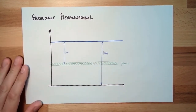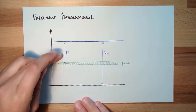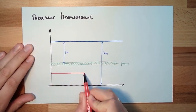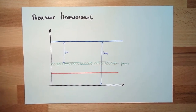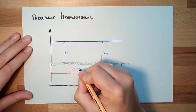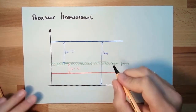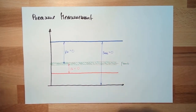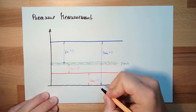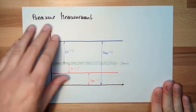Absolute pressure is always bigger than zero. And the excessive pressure may be lower, because if we have, for instance, a suction tube, then this PE is smaller than zero. Excessive pressure can be smaller than zero, while absolute pressure is always bigger than zero. When we are talking about pressure, we need to know which one we are measuring.